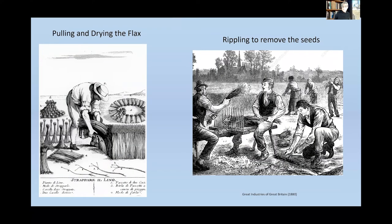Raising and processing flax and hemp required horticultural knowledge, an investment of time and equipment, and a substantial amount of labor — all within the cycle of many other agricultural activities. It could take well over a year from the planting of seed to produce fiber suitable for spinning. Pennsylvania flax fields generally ranged from a quarter to an acre and a half, planted in March and April and ready to harvest by late July. The plants had to be pulled up by the roots, sorted into bundles, and left to dry for two weeks. Once dry, the seed had to be removed in a process called rippling.